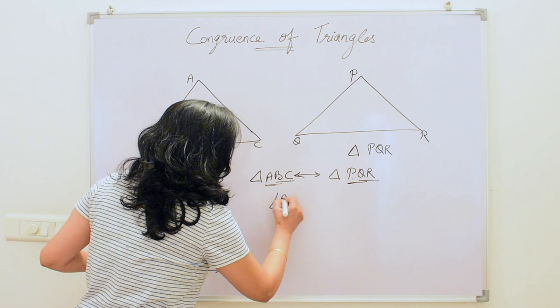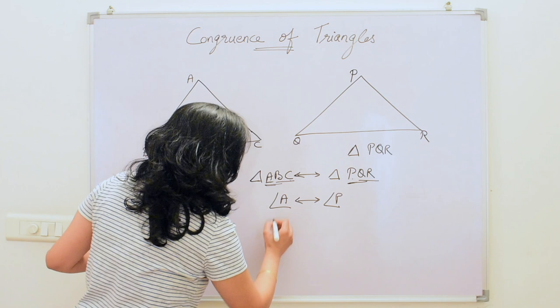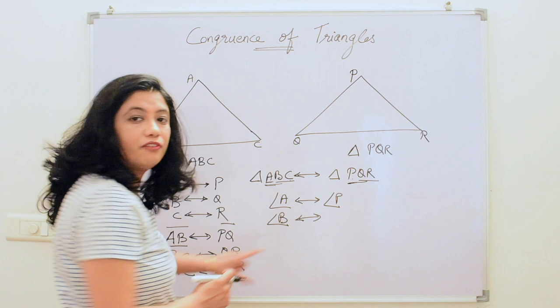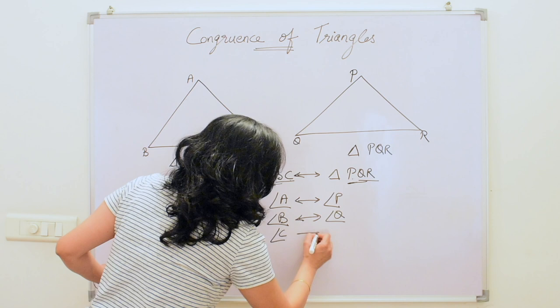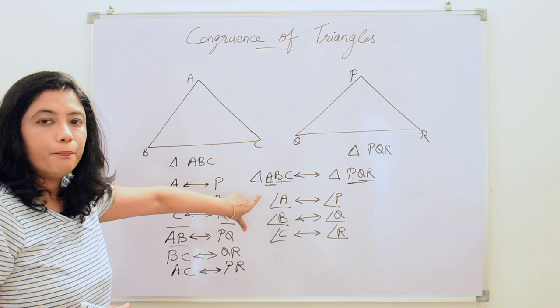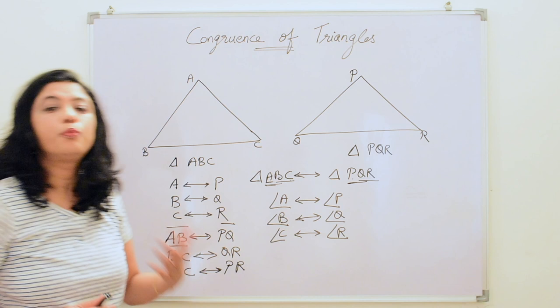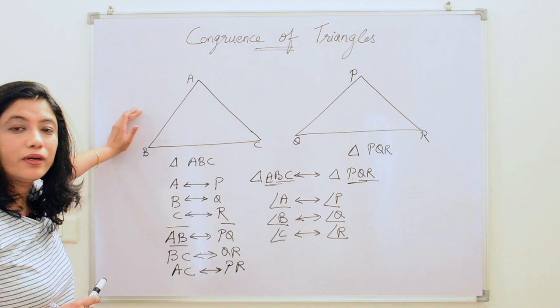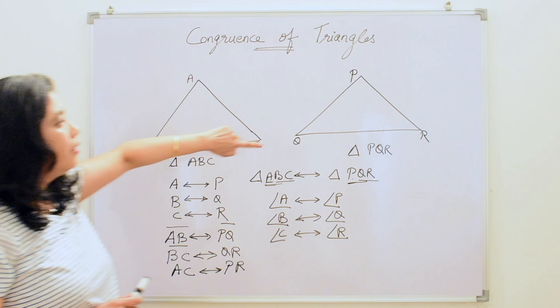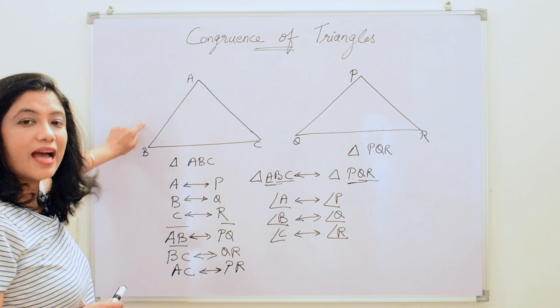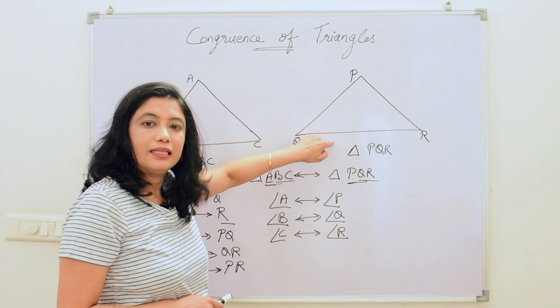Similarly for the angles: angle A corresponds to angle P, angle B corresponds to angle Q, and angle C corresponds to angle R. By seeing the names of the triangles we can find out which vertex corresponds to which, and accordingly find the corresponding sides and angles. When two triangles are congruent, all the angles of one triangle must be equal to the corresponding angles of the other, and all sides must correspond.